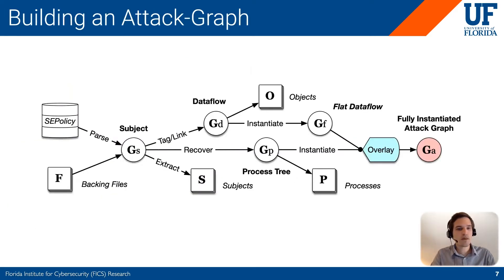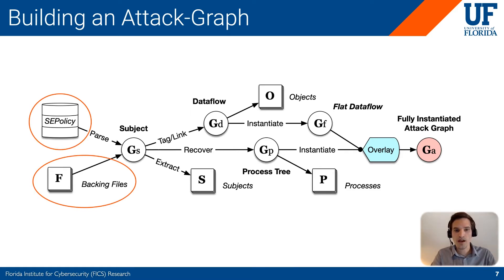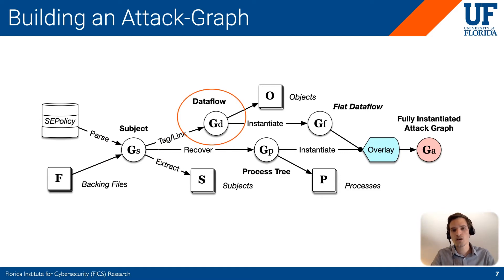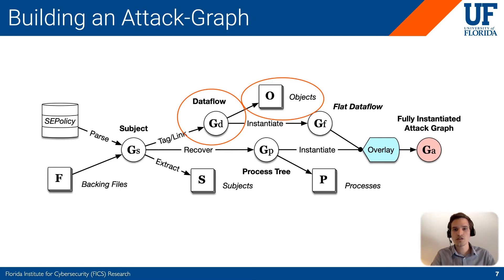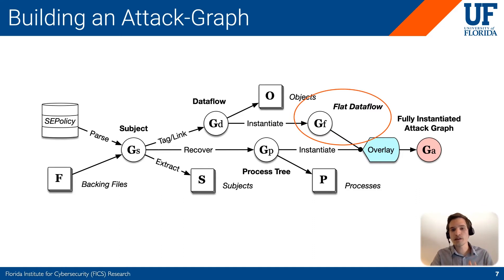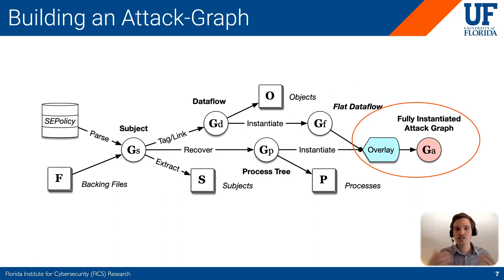Building an attack graph is composed of many different steps, starting with the SELinux policy and the backing files we extracted. This allows us to create a subject graph, which is a very coarse-grained graph linking all the possible subjects in the system. We quickly translate this into a data flow graph, which boils down the edges between subjects to a simple read-write relationship, matching our privilege escalation model. In parallel, we recover a process tree with a hierarchy of all possible processes in the system. We then flatten the data flow graph and overlay the process tree and flat data flow graph together into a fully instantiated attack graph.